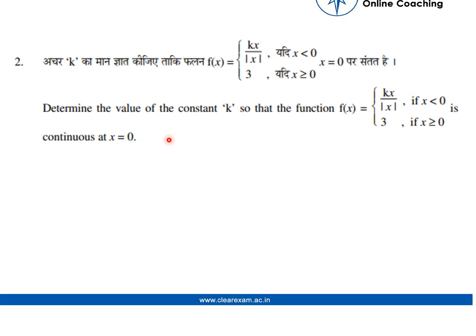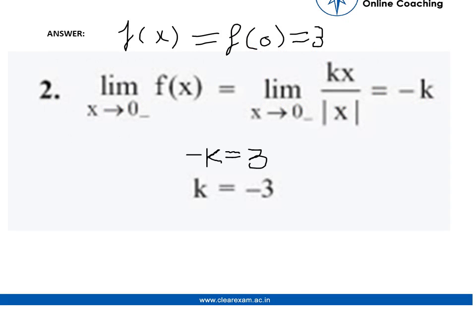As you know that the function is continuous at x equals 0, so we can easily say that f(x) equals f(0), and we know that f(0) equals 3. It is given in the question itself that when the value of x is greater than or equal to 0, then the value would be 3.